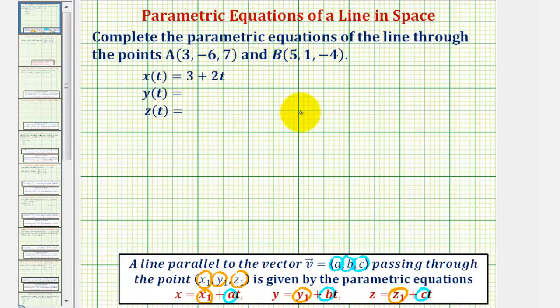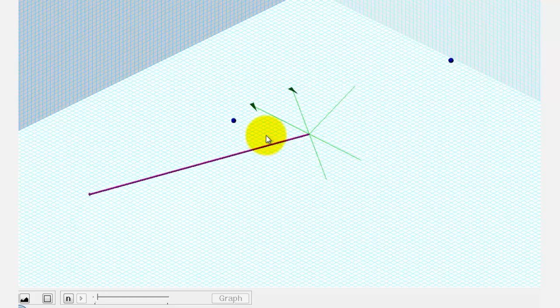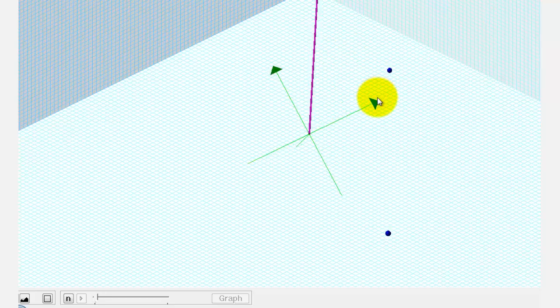Let's look at these two points in space. Here's a graph of the two points in space. Our goal is to find the parametric equations of the line passing through these two points.